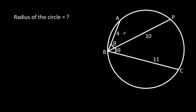In this video, we have been given that AB is 4, BC is 11, BP is 10, and angle ABP is theta, angle CBP is theta. We have to find the radius of the circle.